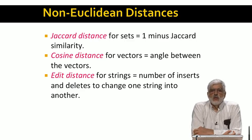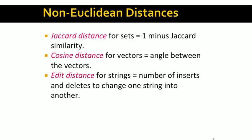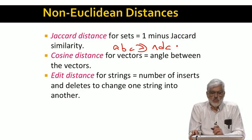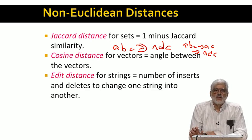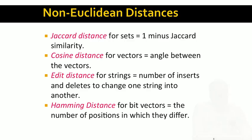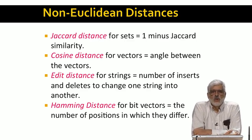There are other notions of edit distance — for example, sometimes we allow a mutation as one edit, where a mutation changes one character to another. For example, ABC could become ADC in one edit. Without mutations, we would need two edits: delete B and insert D. We're only going to talk about the insert-delete version of edit distance in this course. Finally, the Hamming distance, named after Richard Hamming, applies to bit vectors of the same length, and is the number of positions in which they differ.